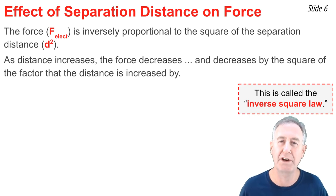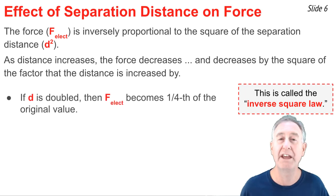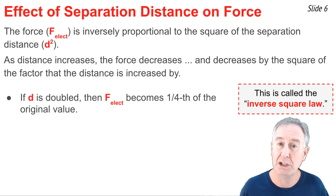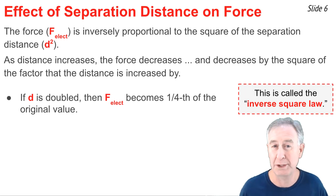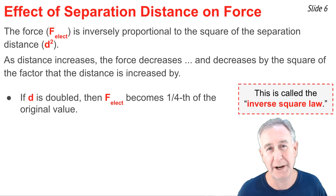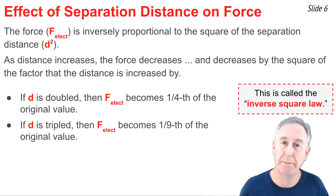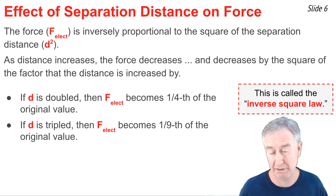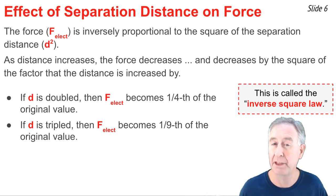Here are four illustrations of how it works. If D is doubled — two times bigger — then F gets smaller and becomes one-fourth of the original value, that is 1 divided by 2 squared. And if D is tripled — three times bigger — then F becomes one-ninth of the original value, that is 1 divided by 3 squared.